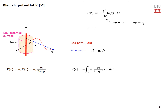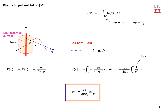Plugging in the electric field and dL element: the radial unit vectors dot to unity, constants come outside the integral, and we integrate 1/r, which gives the natural logarithm of r. Evaluating at the limits yields the final expression for potential, showing a logarithmic dependence on the distance from the line charge to the observation point. If r0 were set to infinity, the potential would be infinitely large at all finite points — which is unphysical — confirming that the reference must be at a finite distance from the line charge.